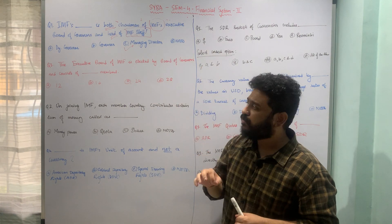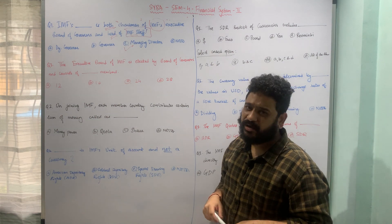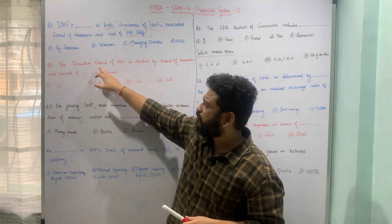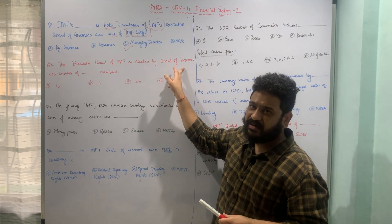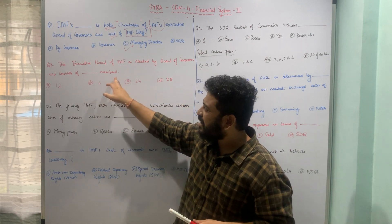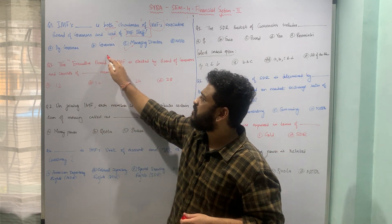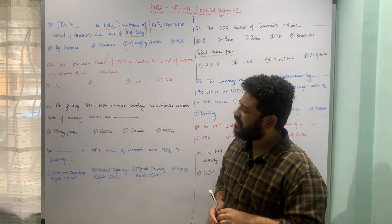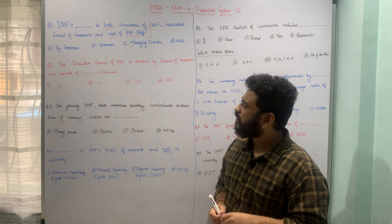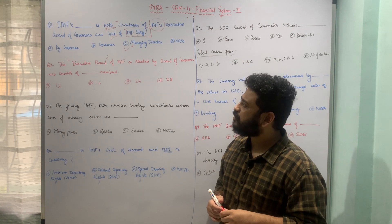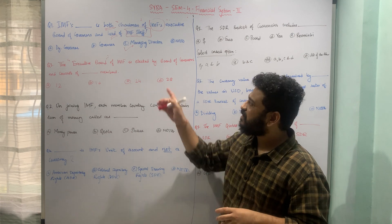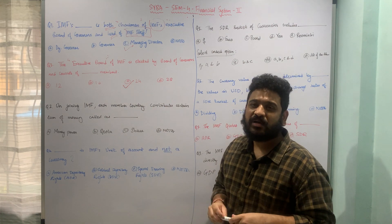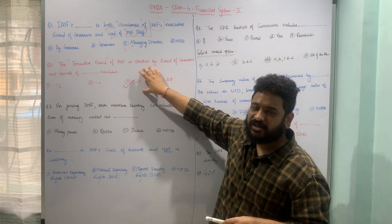The next question: the Executive Board of the IMF is elected by the Board of Governors and consists of how many members? Whether it is A) 12, B) 16, C) 24, or D) 28. The Executive Board of the IMF consists of 24 members, so Option C — 24 — is the correct answer.